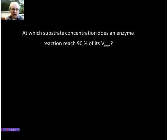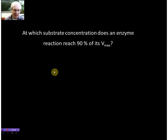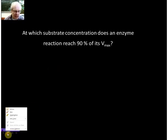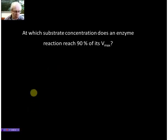Now let's assume we want to know at which substrate concentration an enzyme reaction reaches 90% of its Vmax. So how are we going to deal with something like that? What we do first of all is we write down our Michaelis-Menten equation.